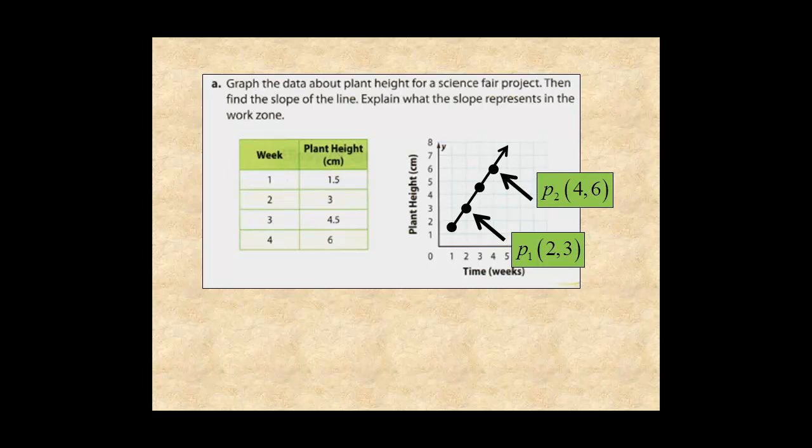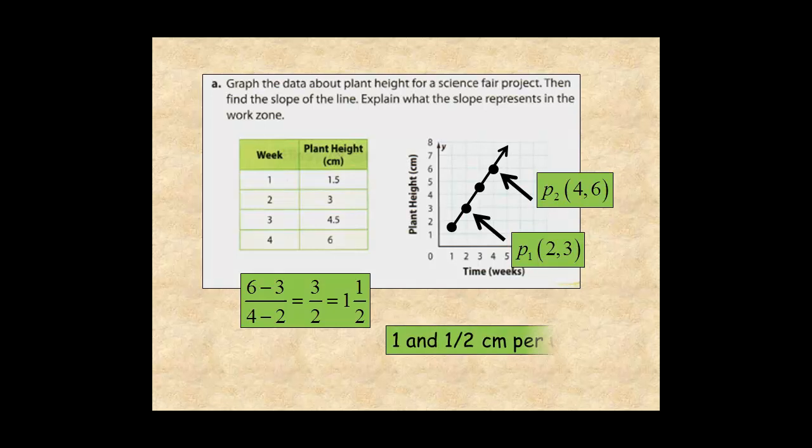So the slope is 6 minus 3 over 4 minus 2, which is 3 over 2, or 1 and 1 half. So the slope represents the rate of growth, 1 and 1 half centimeters per week.